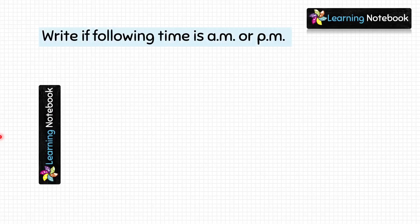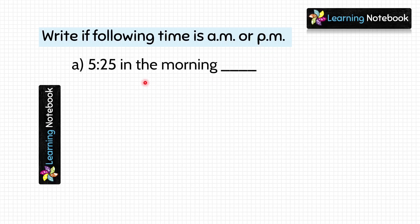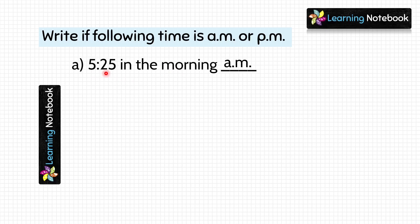Write if the following given time is AM or PM. First is 5.25 in the morning. Time is given in the morning and time in the morning is always in AM. So it is 5.25 AM.